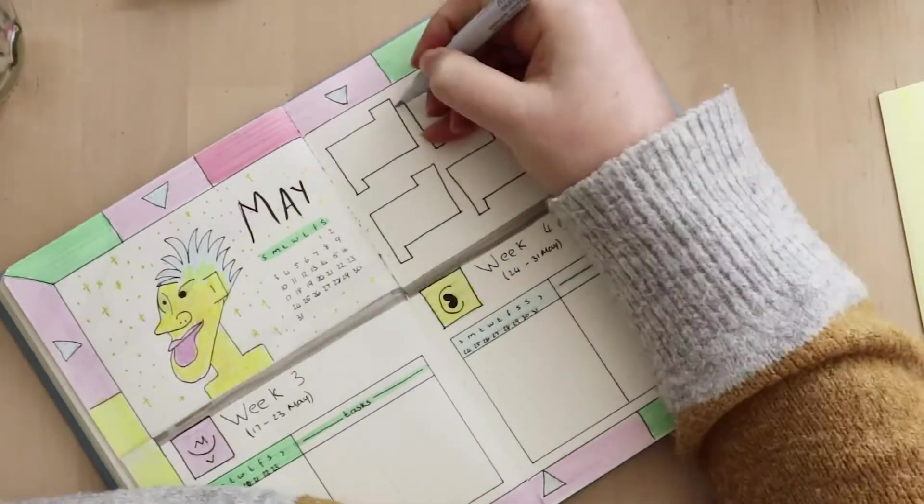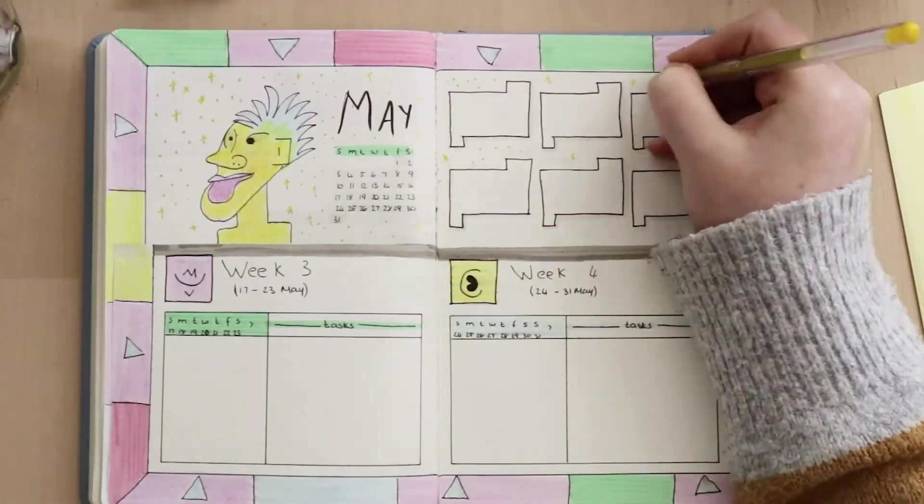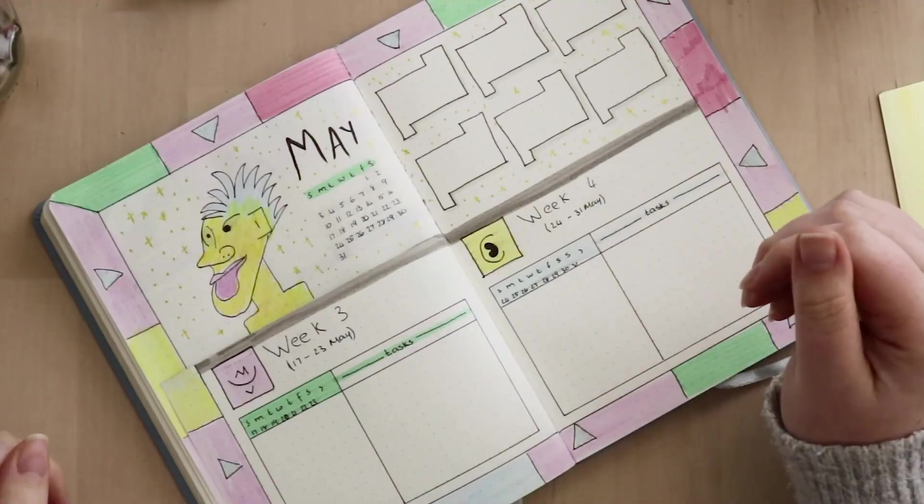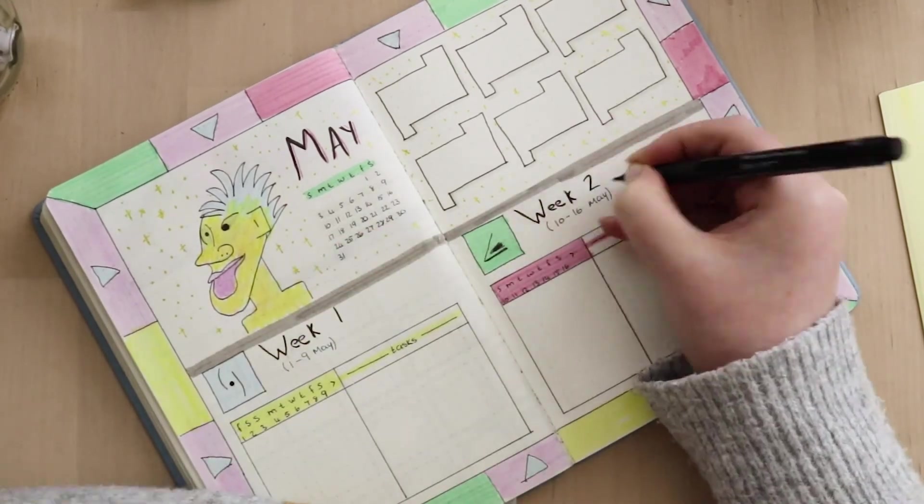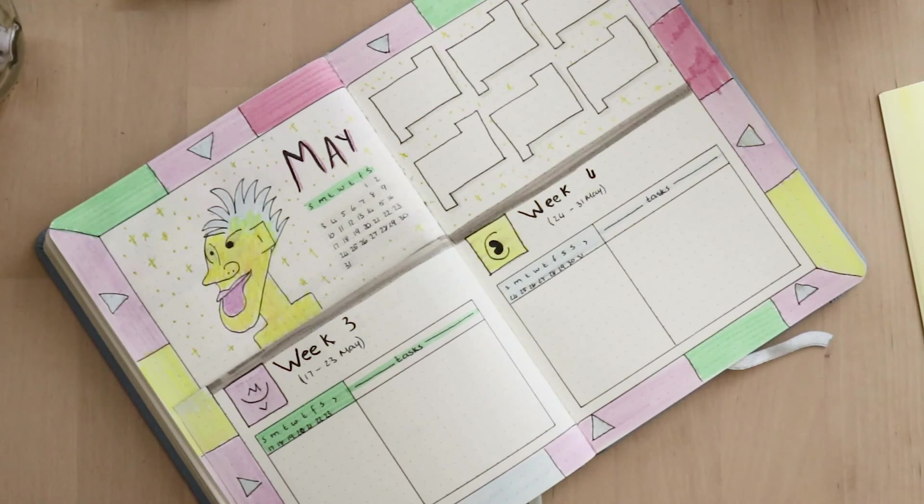Just a couple of finishing touches then - adding some colorful drop shadows to that habit tracker, adding in some stars to the page, and just darkening up those headlines to make them pop out so that I can actually read them. My four week spread for May is done.